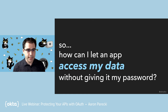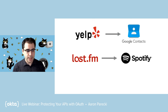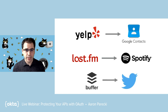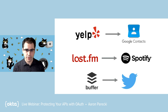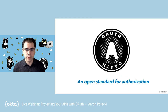That was the original problem that OAuth set out to solve: how can we let an app access my data without giving it my password? This takes a lot of different forms — you have Yelp trying to access your contacts from Google, Last.fm trying to pull your listening data from Spotify, Buffer trying to post tweets. What all these have in common is that it's an application by one company trying to access data in an API made by a different company — it was always about third-party access to accounts. That was really how OAuth was created.